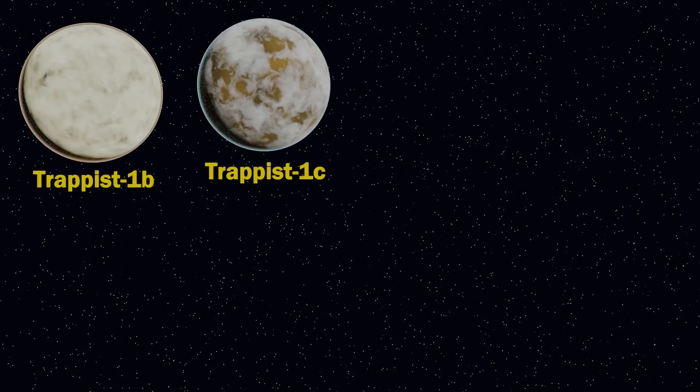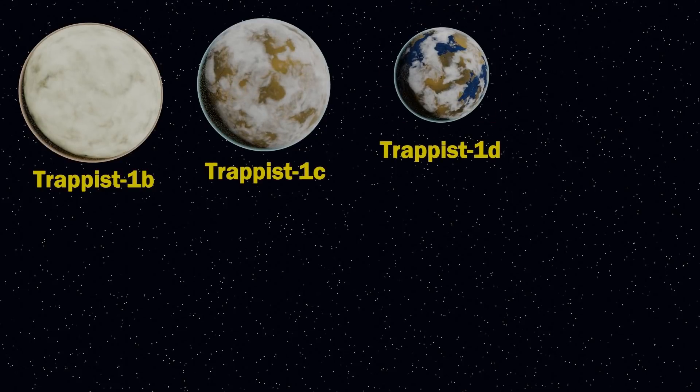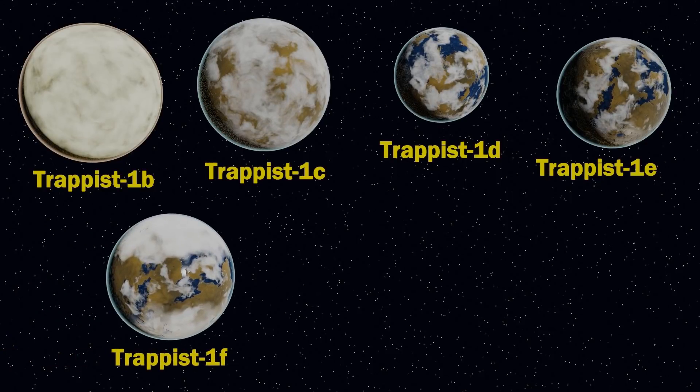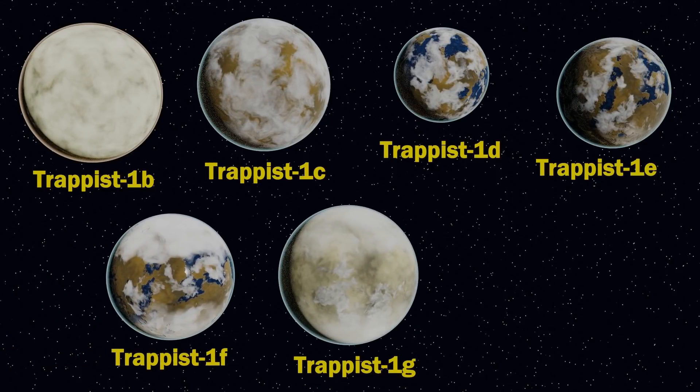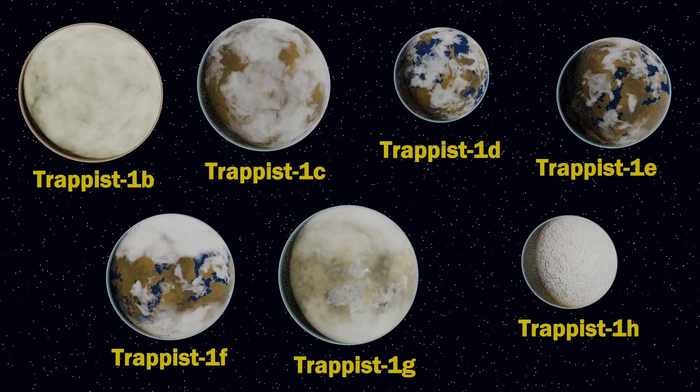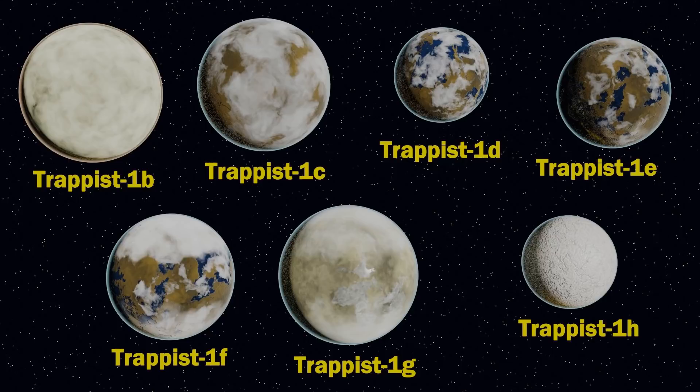At number five, and first up on our list, is not just a planet, but a whole solar system, that of Trappist-1. At just 39 light years away, it can be considered to be in our local neighbourhood. This is noteworthy because the star has seven rocky planets, five of which are similar in size to the Earth, and three which lie within the Goldilocks zone, where liquid water is possible.